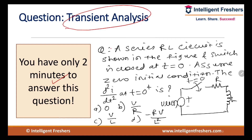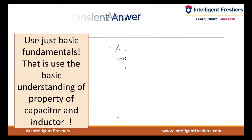A series RL circuit is shown in the figure. The switch is closed at t = 0. Assume zero initial conditions. The value of d²i/dt² at t = 0+ is given by — four options are given, you need to choose the correct option. You have just two minutes time to answer this question.